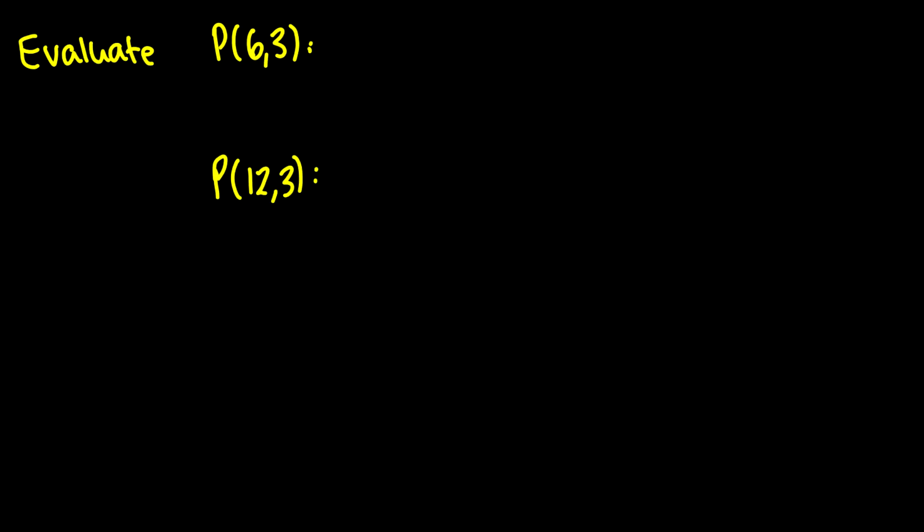Anyways, let's move on to a more mechanical problem, because the formula is definitely very important when we deal with lists that don't use all of the elements. So, evaluate P(6,3). Of course, we want to write at the bottom that P of n choose k is n factorial over n minus k factorial.